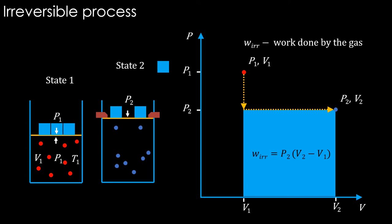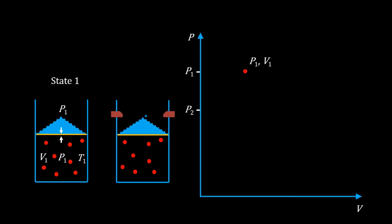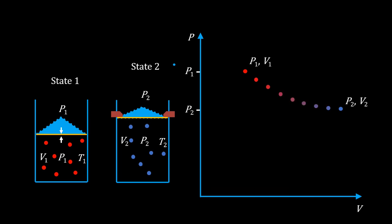Let's see the other case. Let's say we remove the same one third of the weight, not in one go but stone by stone. When the first stone was removed, the pressure drops and the volume expands similar to the irreversible case, but only to a tiny degree. For further removal of stones, we have these states and eventually the state two.